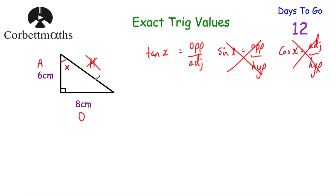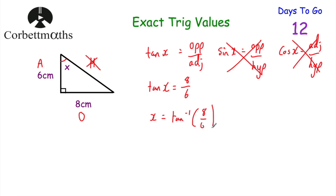So the tan of x is equal to the opposite, which is 8 centimetres, divided by the adjacent, which is 6. So tan(x) equals 8 sixths. Now we want to find the size of this angle, so we need the inverse tan. So x equals inverse tan of 8 sixths. Using a calculator — shift, tan, then 8 over 6 — gives us x equals 53.1301 degrees, which to two decimal places is 53.13 degrees. And if you got that, well done.